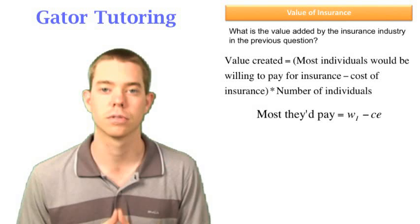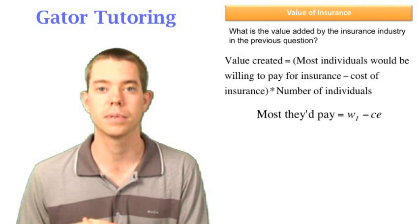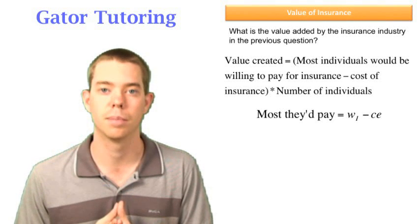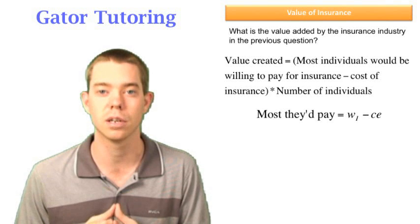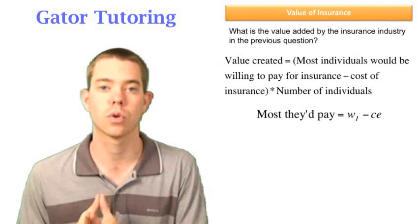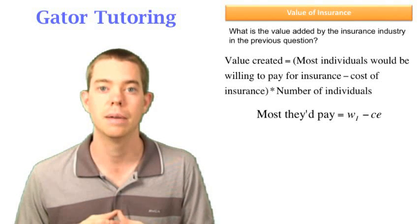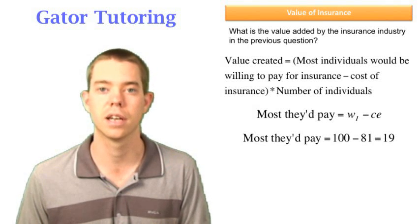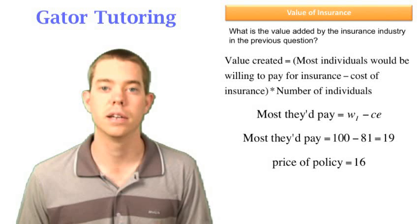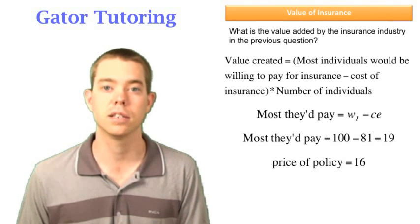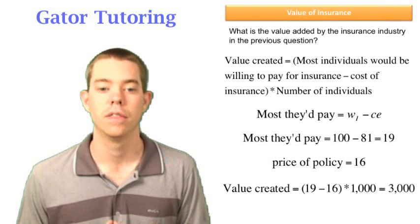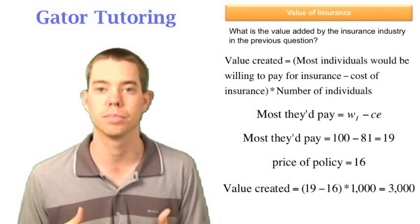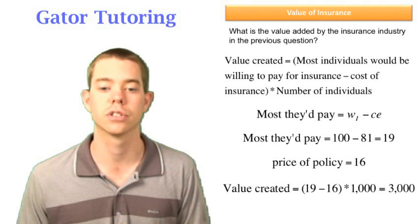So their initial wealth was $100. They have $100 today. They're willing to accept $81 because that was their certainty equivalent in order to not take any risk. So the difference between that number, the $19, that is the most they'd be willing to pay for insurance. If they have $100 today and they would trade that gamble for $81 to get rid of all the risk, it must be that the most they'd be willing to pay for insurance is $19. And we see that here. What they actually pay is the price of the policy. That's $16. So if they're willing to pay $19 and they actually pay $16, they just had a value created per person of $3. To find the total value created, we multiply that by 1,000 people in the industry and we see the total value created by insurance in this question is $3,000.